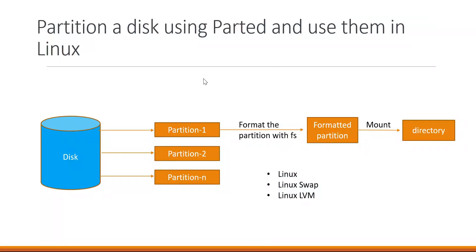In this video, we have seen how to partition a disk using the parted command, how to format these partitions with a particular file system, and how to use those formatted partitions in Linux. We considered three types of partitions: the Linux partition, Linux swap partition, and Linux LVM partition. I hope this video will help you. If you liked the video, please like, share, and subscribe.